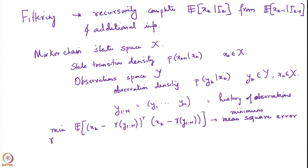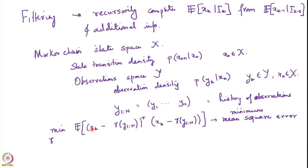The minimization is done over all Borel functions gamma. We are allowed to pick any Borel function of the observations made so far in order to estimate x_k. Notice that the observations run from 1 to n while the state is at time k — n and k may not be the same, and this is deliberate because there are actually three different types of problem classes that appear.